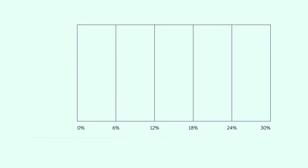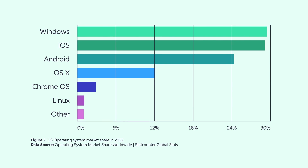When you pick an operating system for your smartphone or computer, you have some choice, but not that much. In 2022, Apple, Windows, and Android were roughly equally dividing 83% of the U.S. operating systems market, as you can see from figure two.